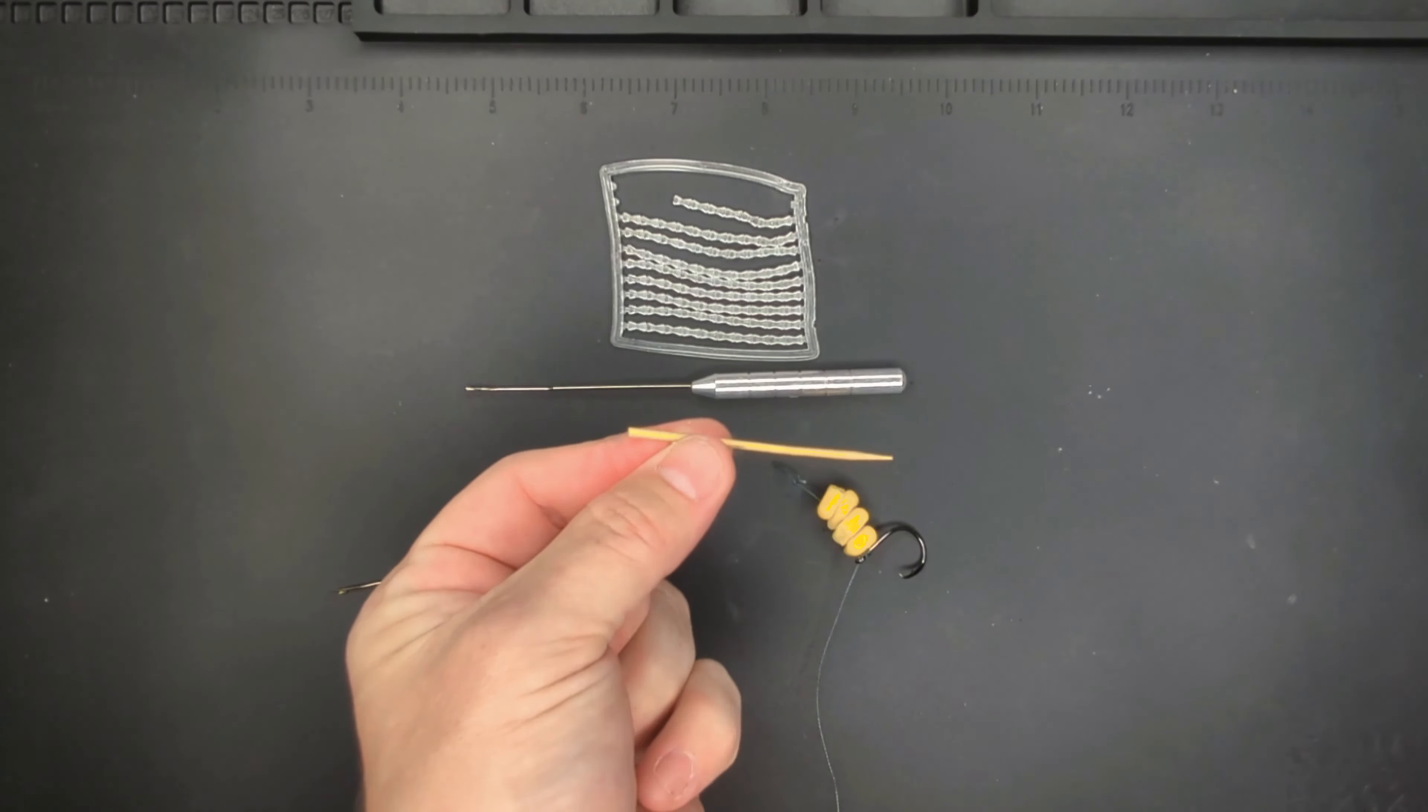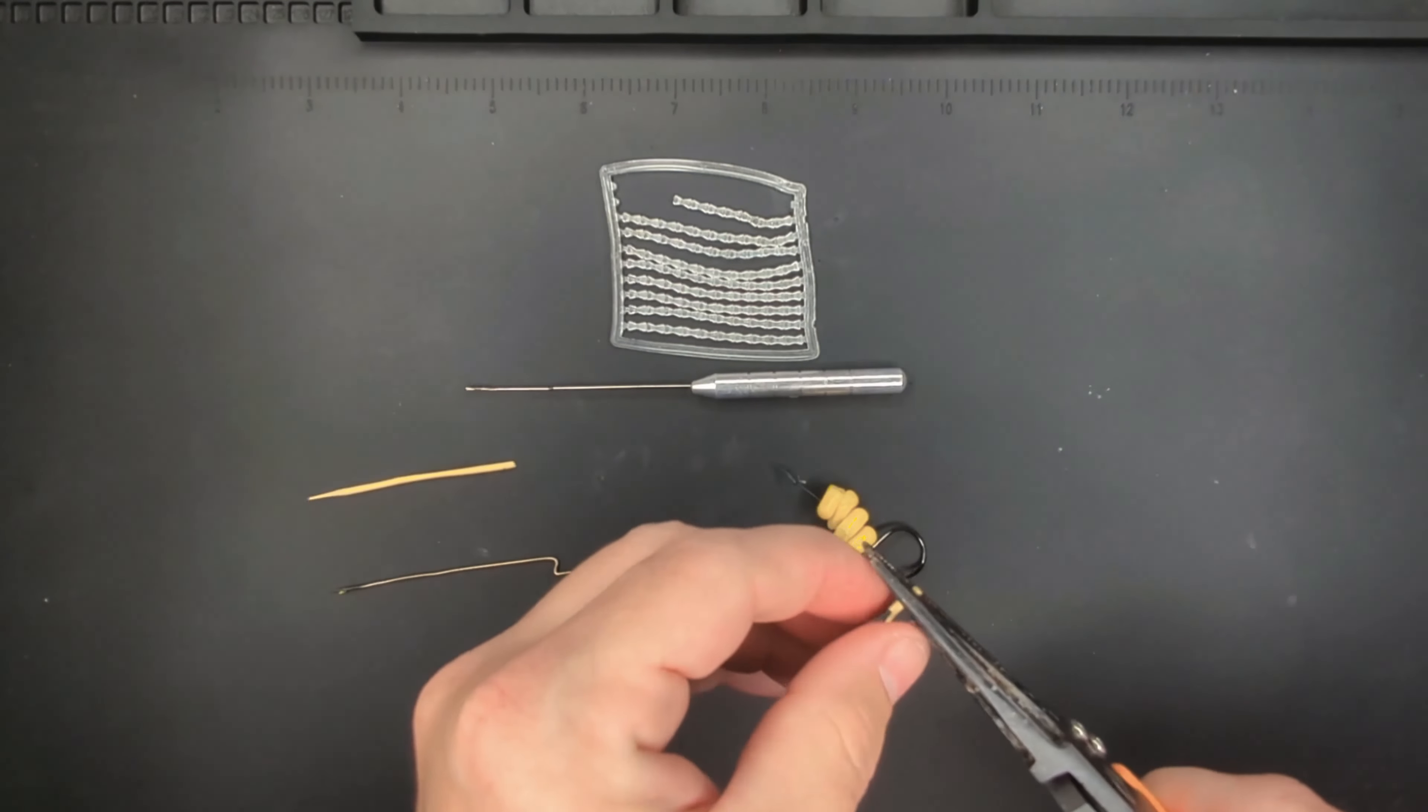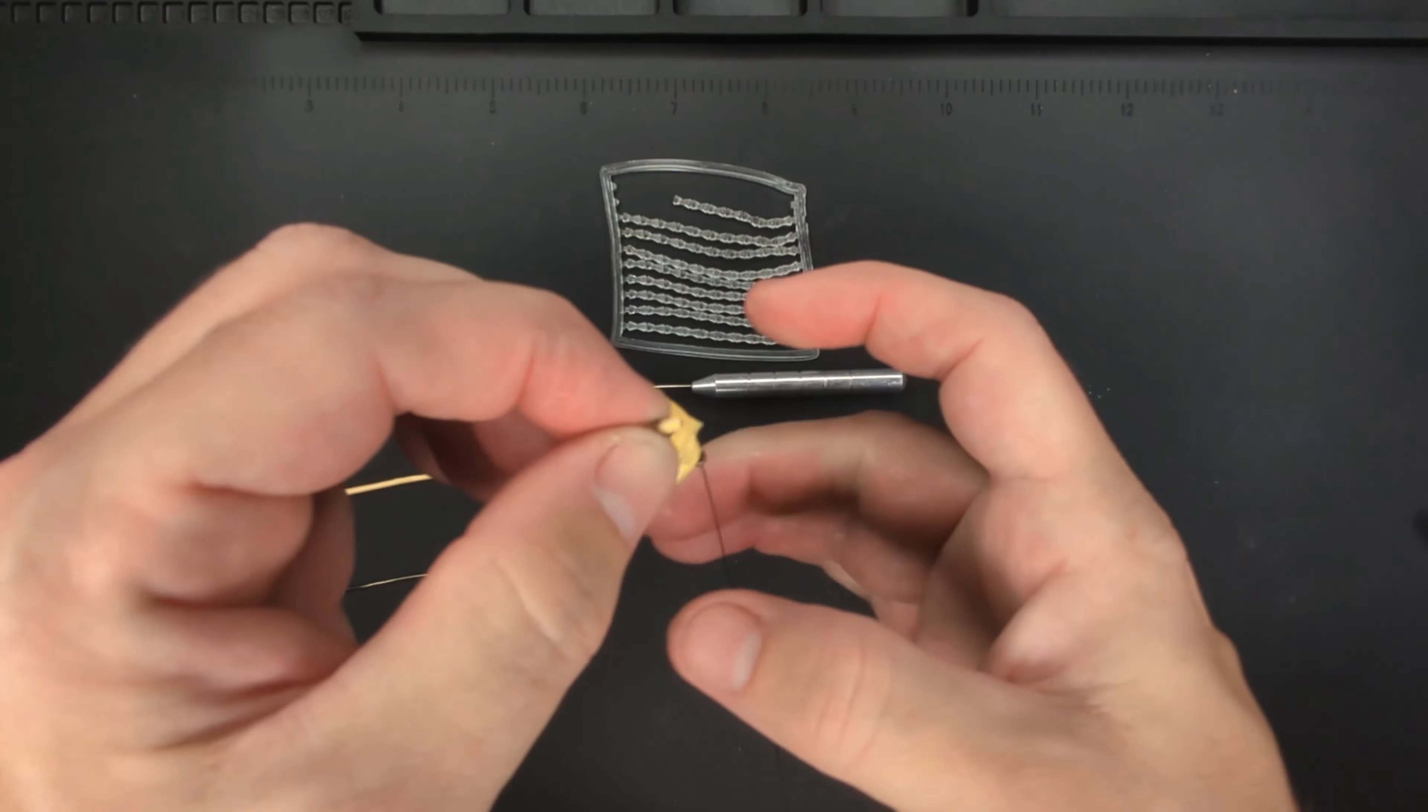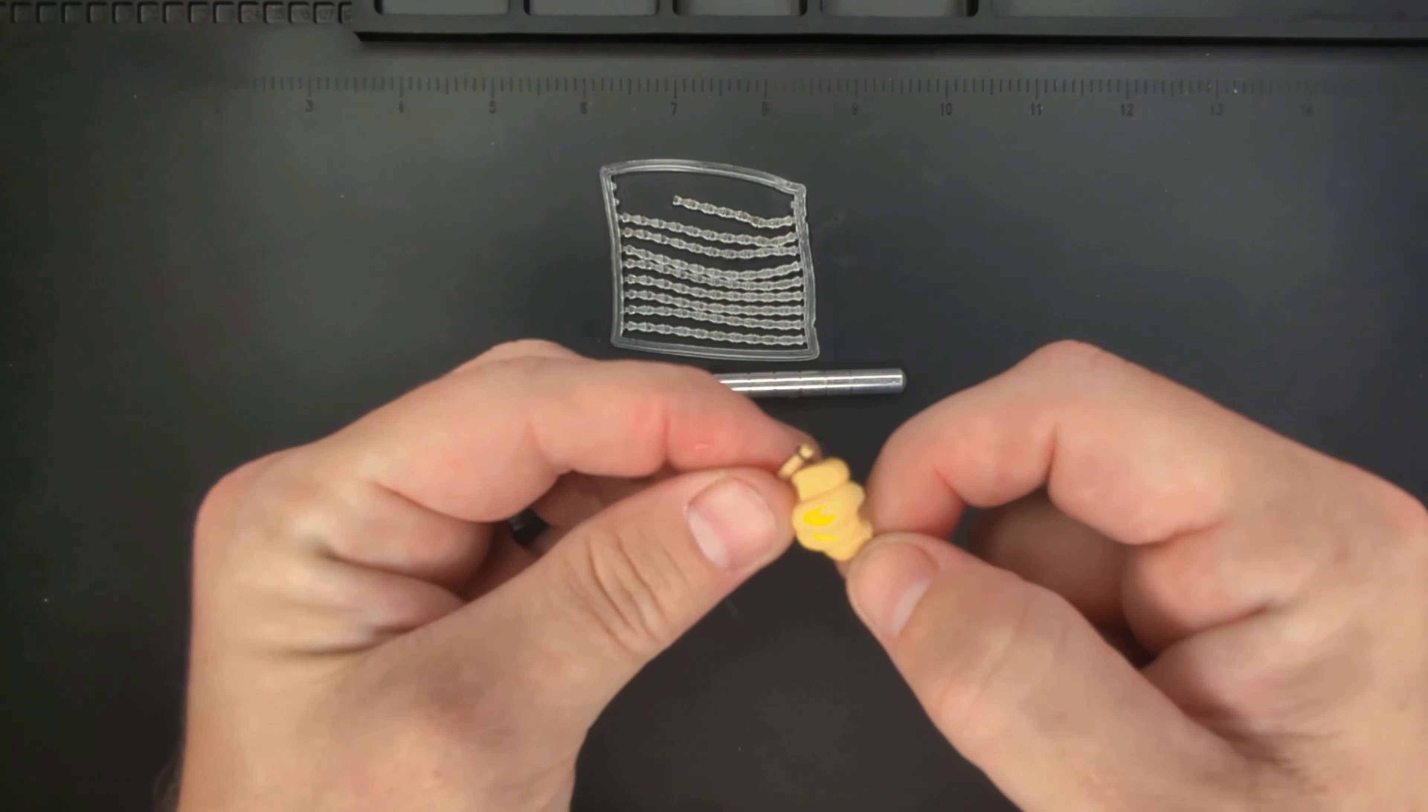Now take your toothpick and break off a small piece. Put this in the loop of your hair rig and push the bait up against the toothpick.